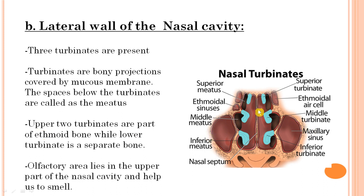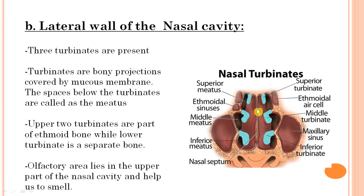An important point: the superior and middle turbinates are parts of the ethmoid bone, however the inferior turbinate is a separate bone on its own. The olfactory area lies in the upper part of the nasal cavity and helps us to smell. We will now cover each of these structures one by one.